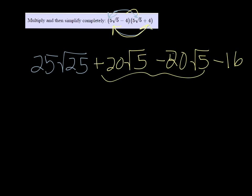So these two middle terms wipe out, they're just 0. And then the first term can be simplified, the square root of 25 is just 5, and multiplied by 25 is 125. And then minus 16. So 125 minus 16 is going to be 109.